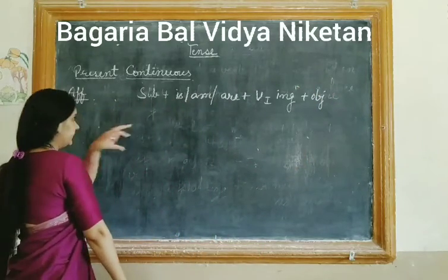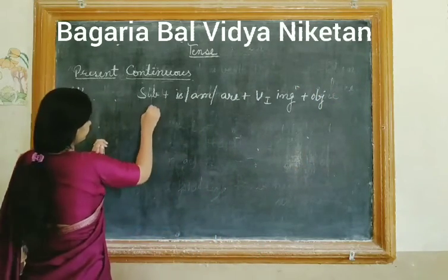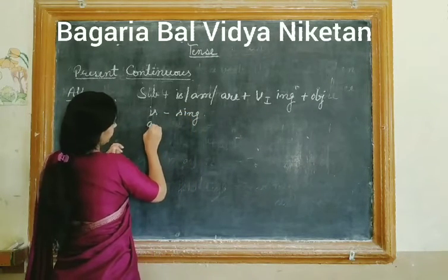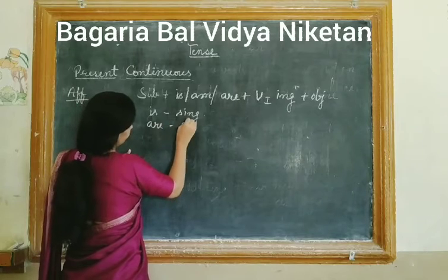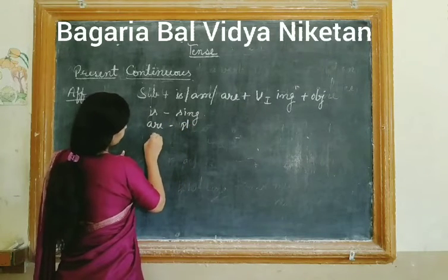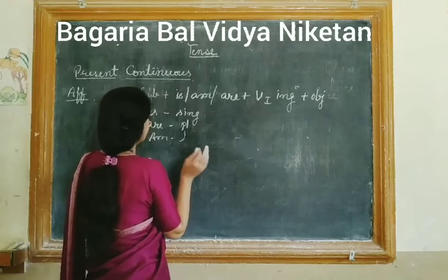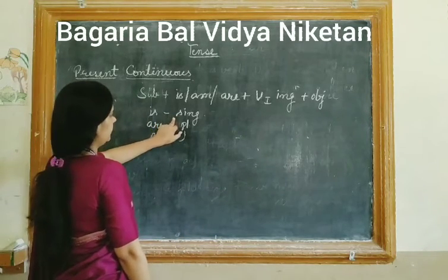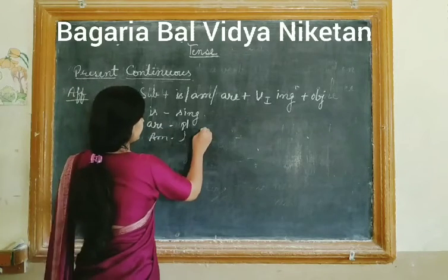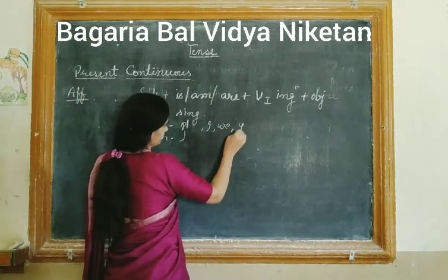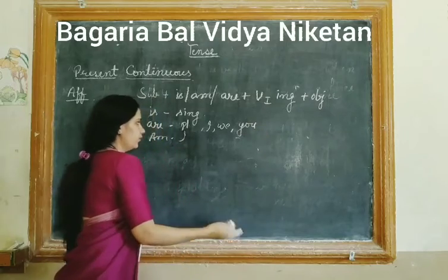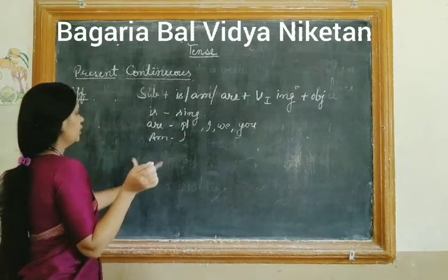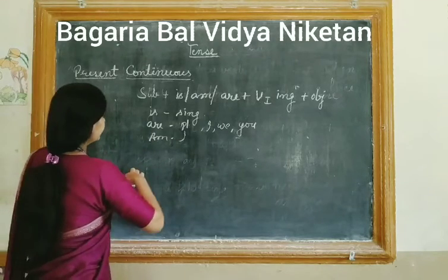'Is' ka use hota hai singular noun ke saath: he, she, it, ya kisi ka naam. 'Are' ka use karenge plural noun ke saath: we, they, you — ya phir 'these girls', 'those boys'. 'Am' ka use hamesha 'I' ke saath hota hai — generally sab ko pata hota hai. So helping verb clear hai.